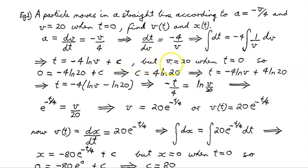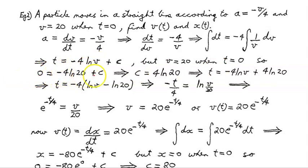We're told that v equals 20 when t equals 0. Substituting: 0 equals minus 4 times the natural log of 20, plus c. That implies c equals 4 times the natural log of 20. Putting that back in, we have t equals minus 4 times the natural log of v plus 4 times the natural log of 20.